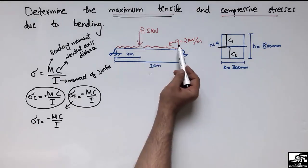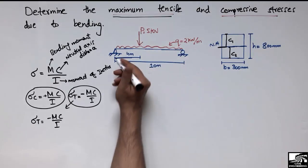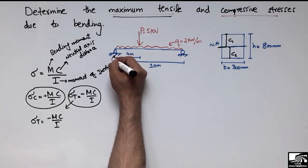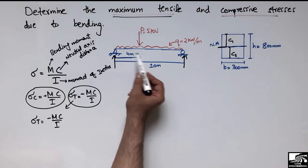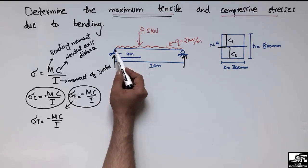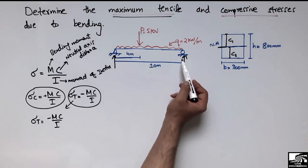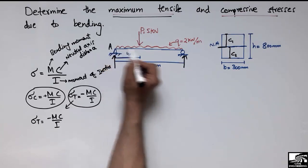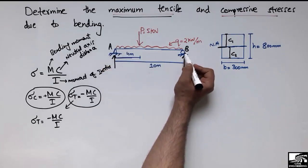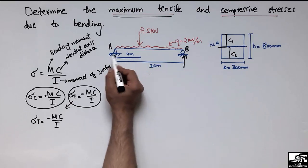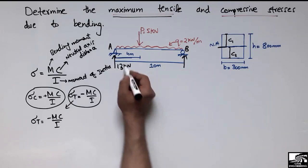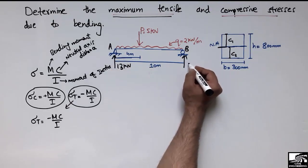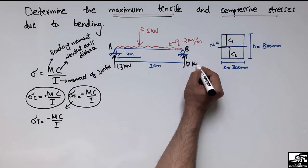We have to find out the bending moment value for this beam with the given loads. Let's find the support reactions — you can find them easily using summation of moments equal to zero at one point, then summation of vertical forces. Let's call the supports A and B. The support reaction at A comes out to be 13 kN and at B it is 12 kN.